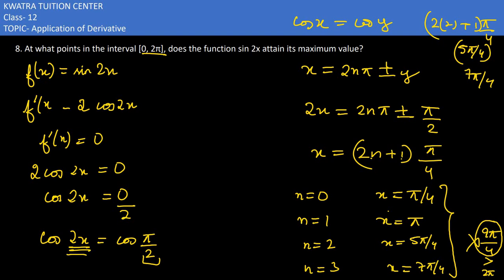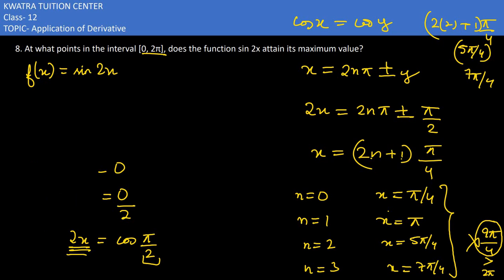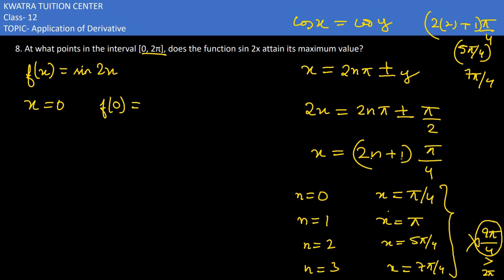Now we put these critical points into the function. At x = 0: f(0) = sin(0) = 0. At x = π/4: f(π/4) = sin(2 · π/4) = sin(π/2) = 1.